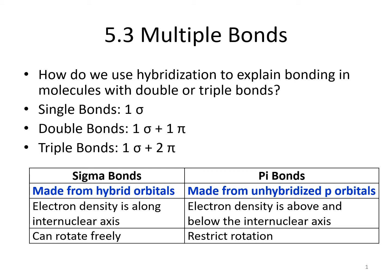Sigma bonds are made using hybrid orbitals. The electrons are found along the internuclear axis, which is the imaginary line connecting the nuclei of the atoms in the bond. Sigma bonds can rotate freely. I like to think of this like a Rubik's cube, where one side can rotate relative to the other sides.